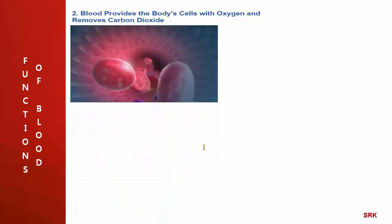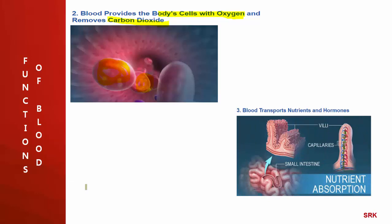Blood provides the body's cells with oxygen and removes carbon dioxide — this is one function of RBCs. Another function: blood transports nutrients and hormones throughout the body.